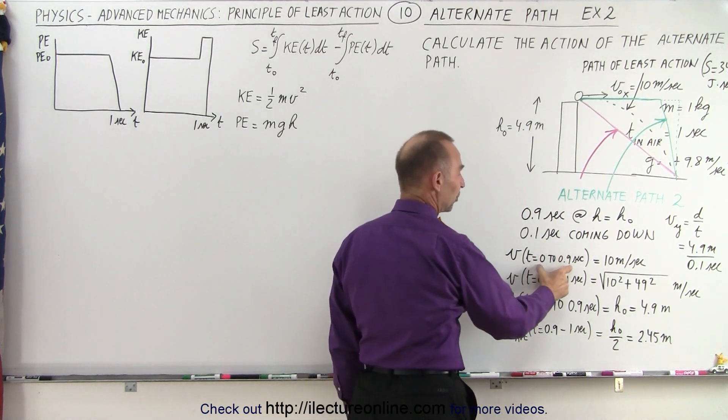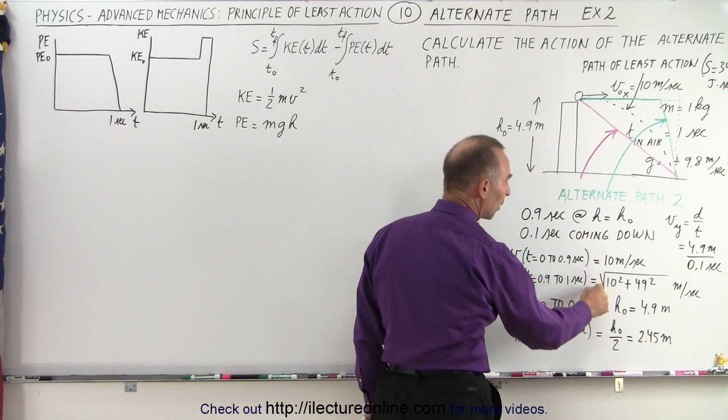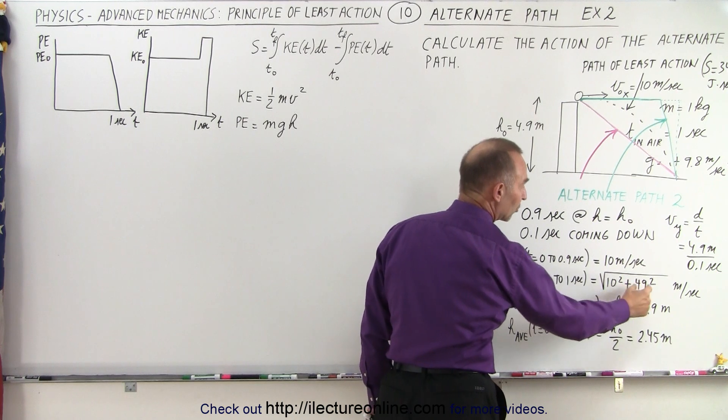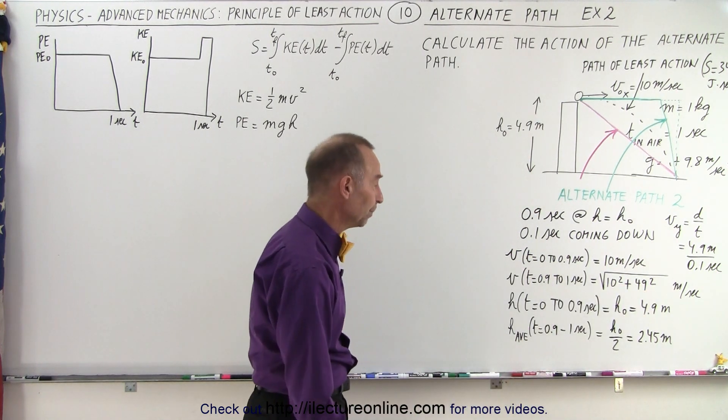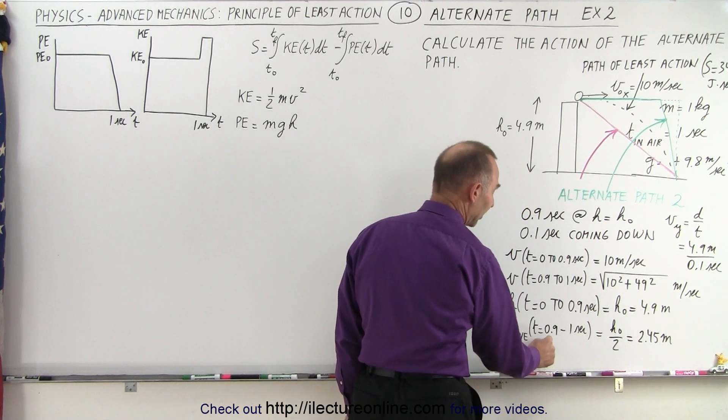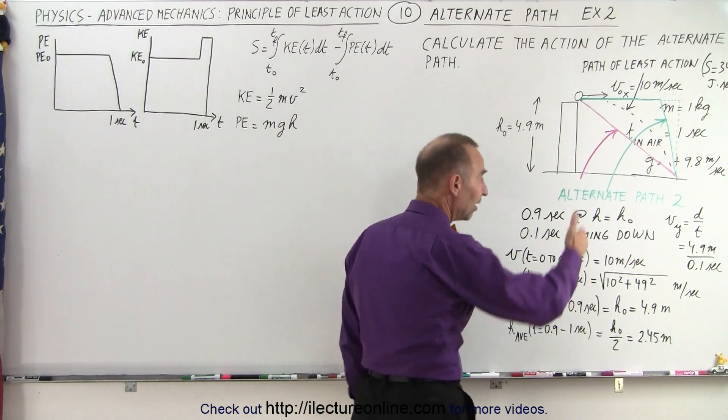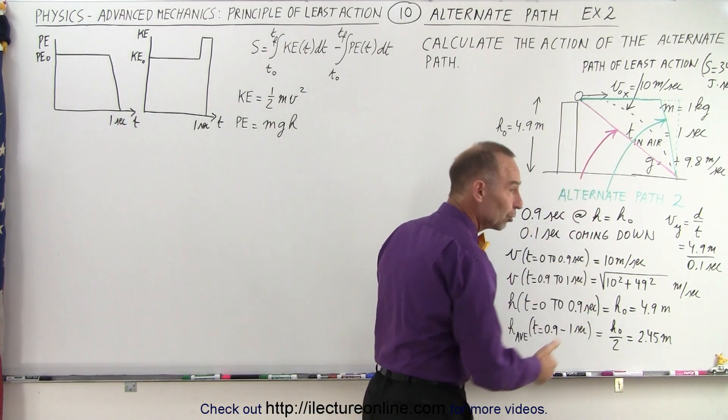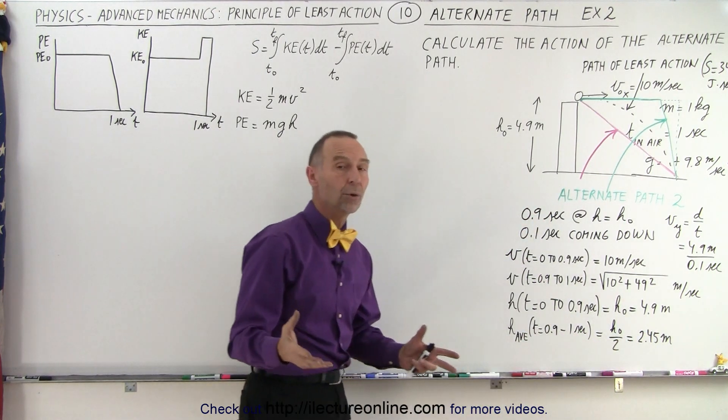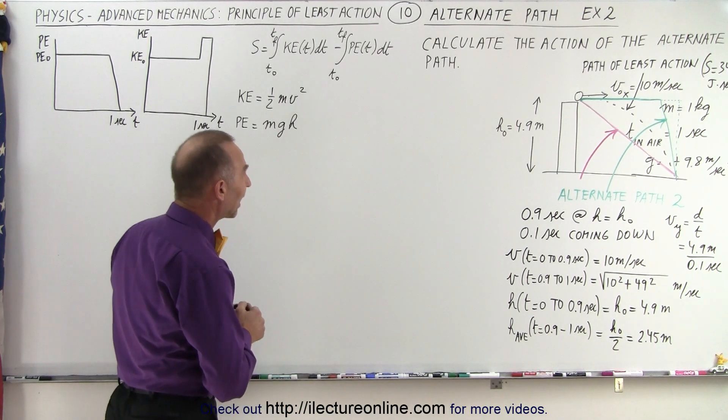So the velocity for the first 0.9 seconds will be 10 meters per second, and for the last tenth of a second will be the square root of the sum of the squares of the x and the y velocities, 10 meters per second in the x direction, 49 meters per second in the y direction. Notice the height will be 4.9 meters for the first 0.9 seconds, and for the last 0.1 second, the average height will be 2.45 meters. Since the velocity in the vertical direction is a constant, we can simply take the average height to come up with the average potential energy over that last 0.1 second.